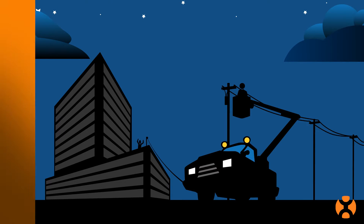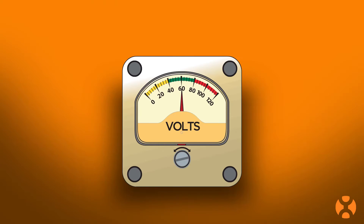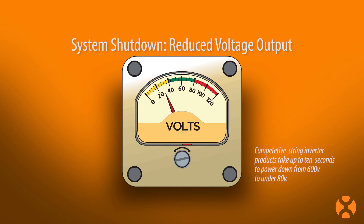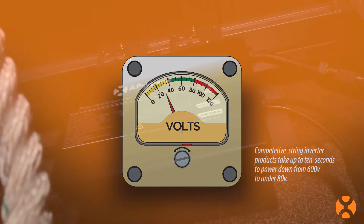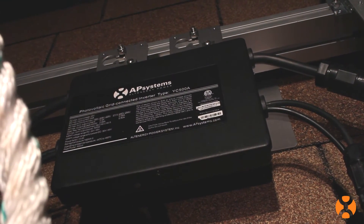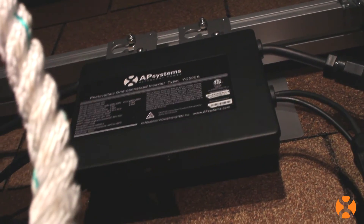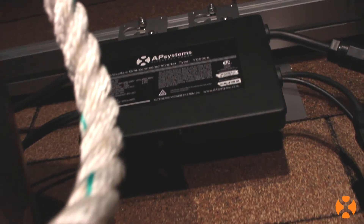With rapid shutdown, the system voltage output is reduced to approximately 30 volts DC, well below the 80 volt DC safety threshold. Also, that current is protected by the module, further limiting the possibility of exposure.